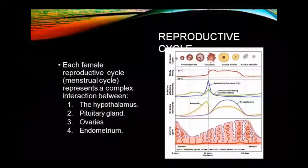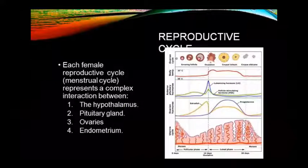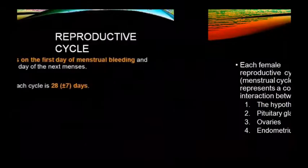For the reproductive cycle, every female's menstrual cycle involves a complex interaction between the hypothalamus, pituitary, ovary, and endometrium. These four structures interact with each other to carry the process forward.